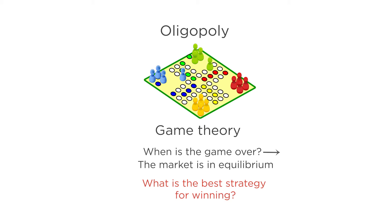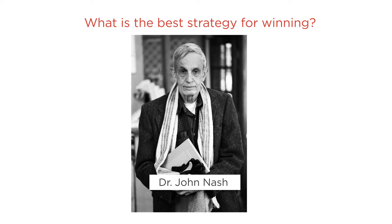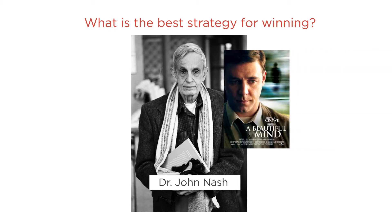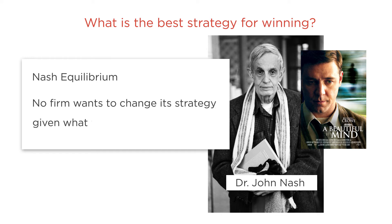In game theory, we typically express this in terms laid out by the Nobel Prize-winning economist and mathematician John Nash, the subject of the book and movie A Beautiful Mind. Nash posited that the game was over and the market was in equilibrium when no firm wants to change its strategy given what other firms are doing — that is, holding all of the firms' strategies constant, no firm could obtain a higher profit by changing its strategy.